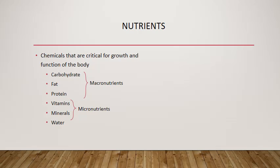There are six major nutrients: carbohydrates, fats, proteins, vitamins, minerals, and water. Nutrients are defined as chemicals that are critical for growth and function of the body. There are chemicals everywhere — in food, paints, cleaning agents, soaps, body lotions, makeups, and perfumes. By and large, the chemicals in our food are considered nutrients, but not all chemicals in food are nutrients. Alcohol is a great example — it's a chemical, but it is not considered a nutrient because it is not critical for growth and function.